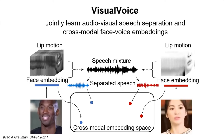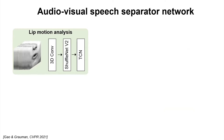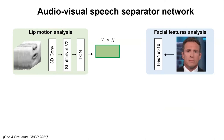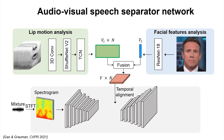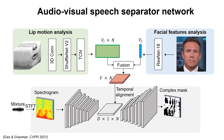During training, you have mixed speech input from a pair of speakers. You observe their lip motion and their face, aiming to separate their speech in a way that satisfies cross-modal embedding constraints. The AV speech separator network uses 3D convolutions on lip regions, plus image features from the full face. These visual inputs are fused with audio — the mixed audio is converted to a spectrogram and pushed through a U-Net-style encoder-decoder, outputting a complex mask that selects the target person's voice from the spectrogram.